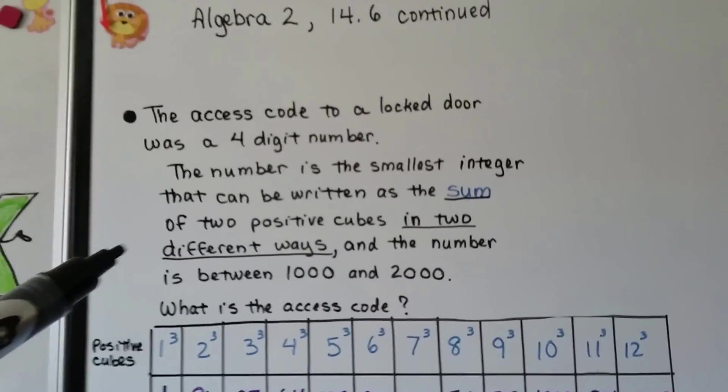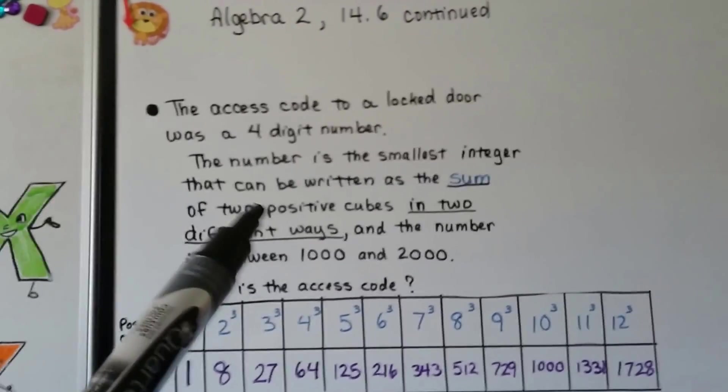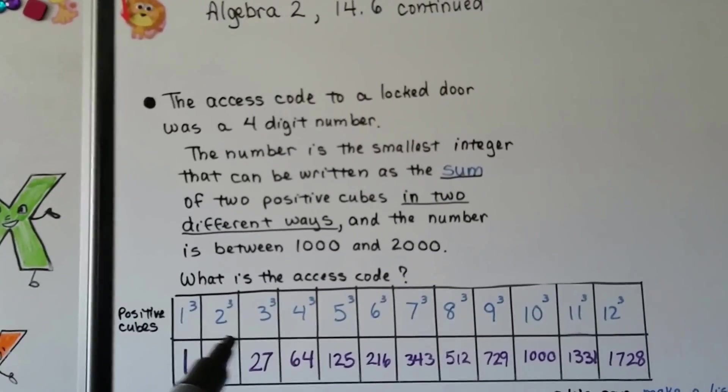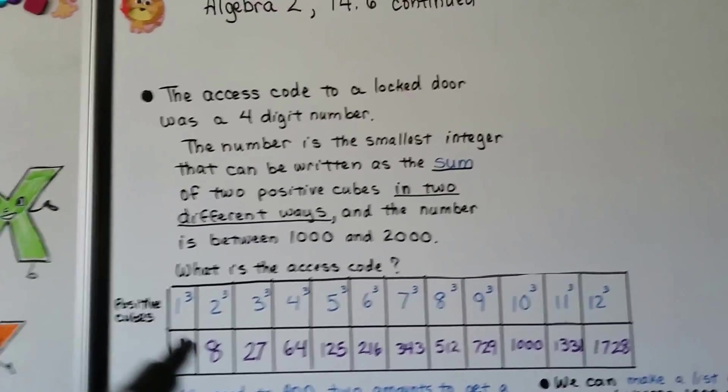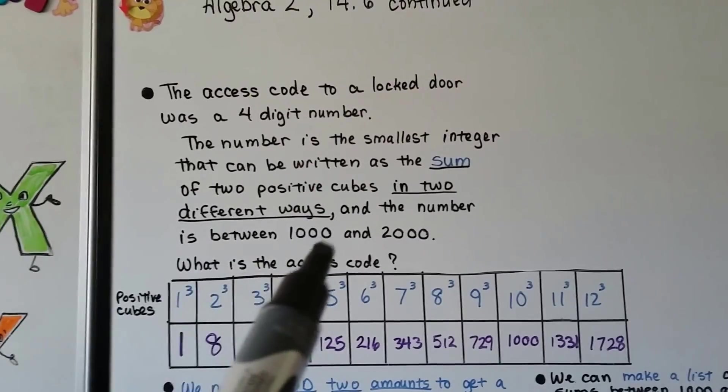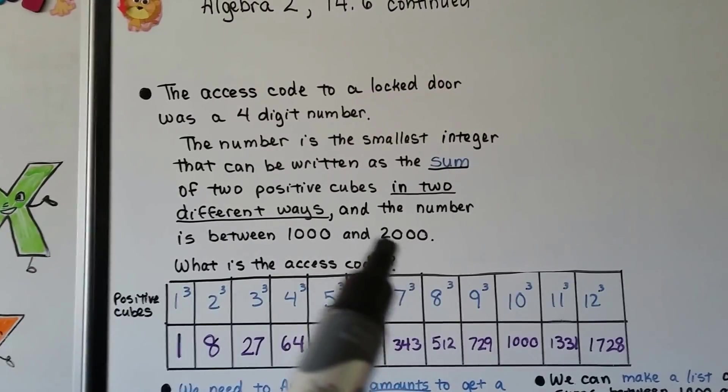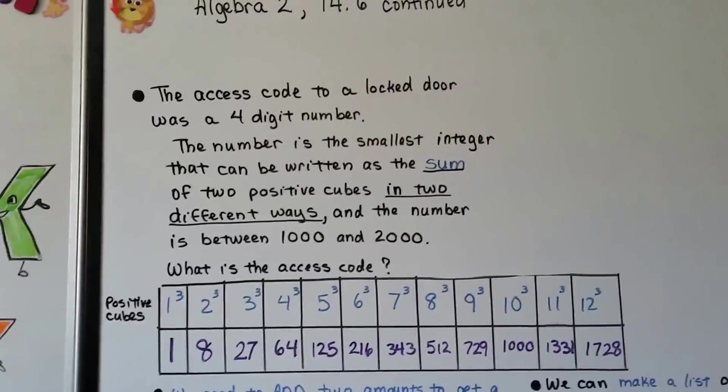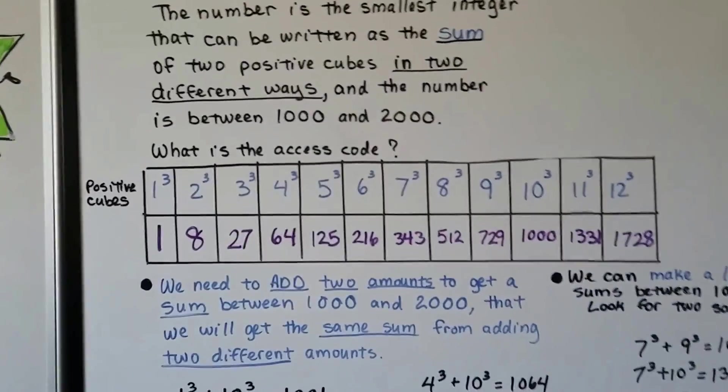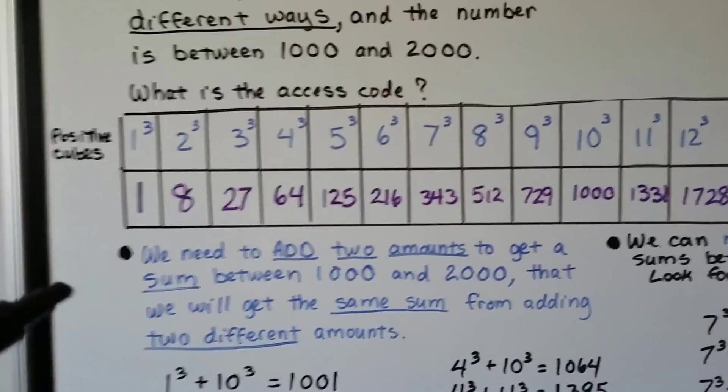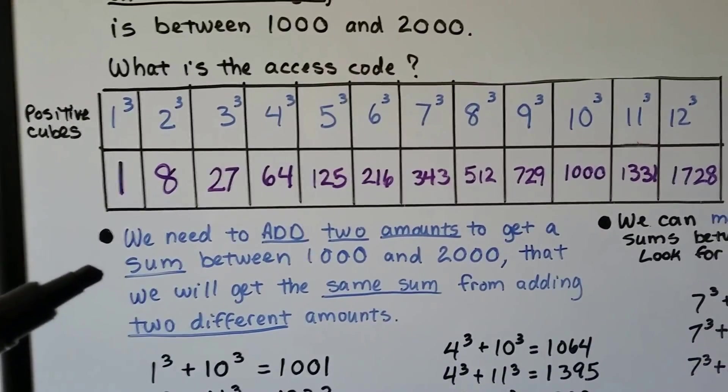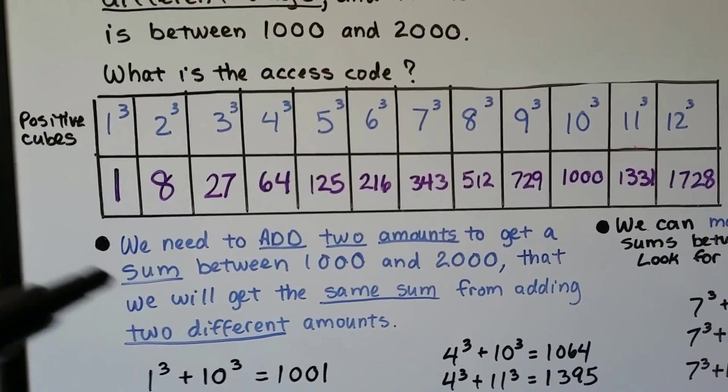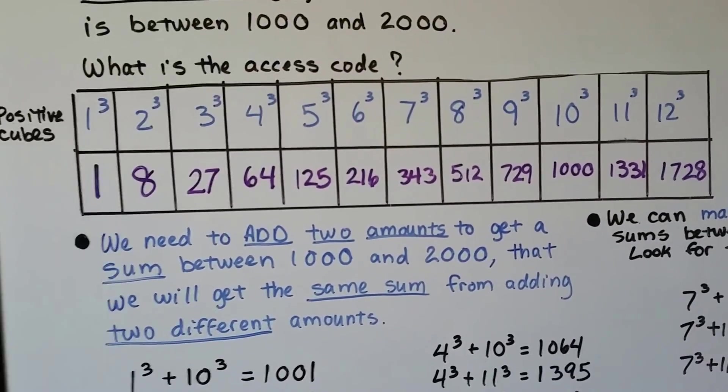So if we break this down, we need two positive cubes, so no negatives are allowed, and it's the sum. So we know we're going to be adding these, and the sum has to be between 1,000 and 2,000. Then we need two other cubes that make that same number. So we need to add two amounts to get a sum between 1,000 and 2,000 that will get the same sum for adding two different amounts.